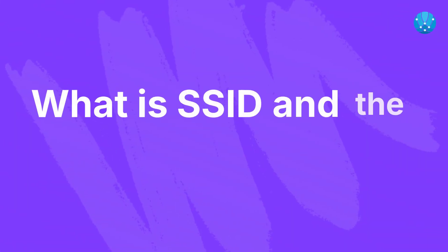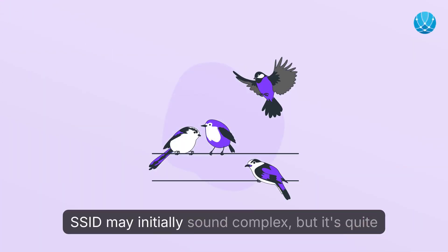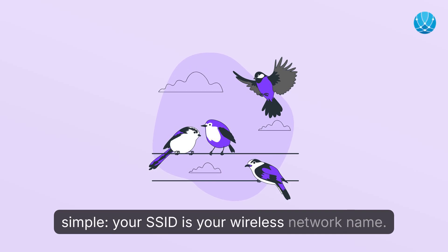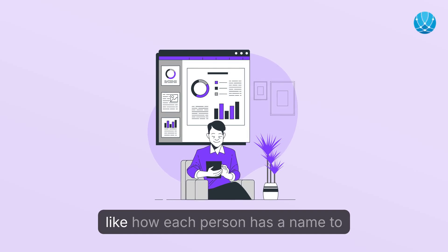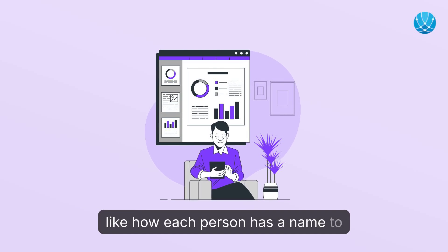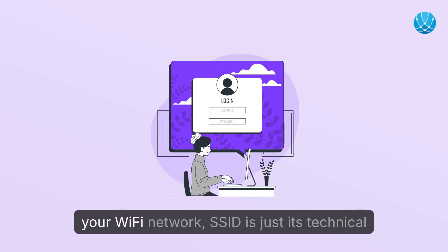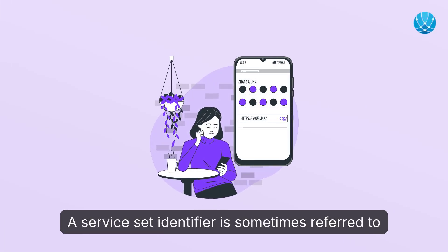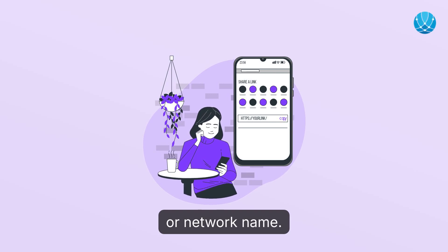What is SSID and SSID meaning? SSID may initially sound complex, but it's quite simple — your SSID is your wireless network name. Every Wi-Fi network has a unique name, much like how each person has a name to identify them. While you may know the name of your Wi-Fi network, SSID is just its technical term. A service set identifier is sometimes referred to as a service name, service ID, network ID, or network name.